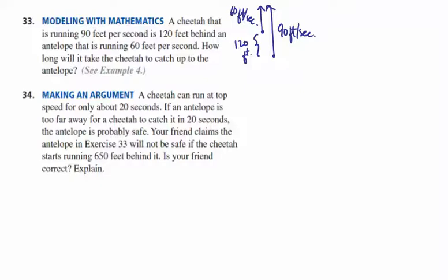So from this, we can make an equation. We want to find out how long it's going to take the cheetah to catch up to the antelope. And from this, we can see that the distances, we don't know the time. So we're going to call that X. Well, the distance that the cheetah runs is 90 feet per second times X seconds. The distance that the antelope runs is going to be 60 times the number of seconds that the antelope runs. Now, the problem here is that they're not both running the same distance. They are running the same time, but they're not running the same distance.